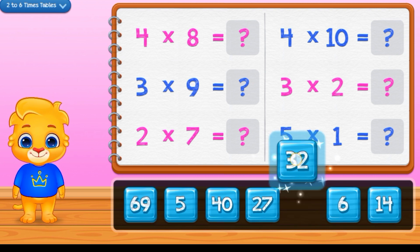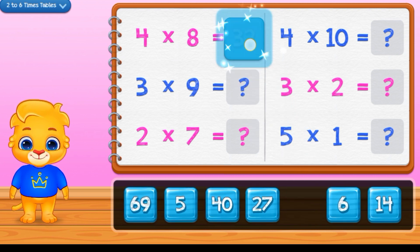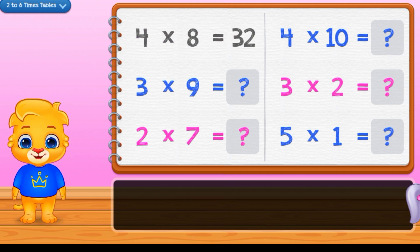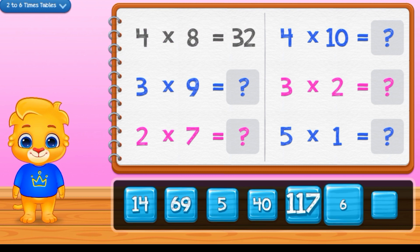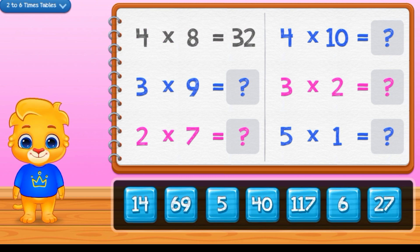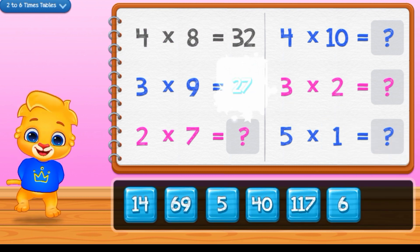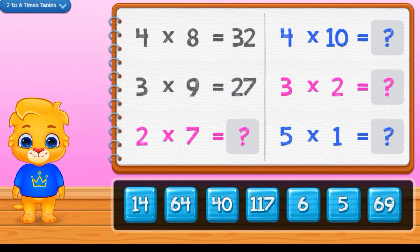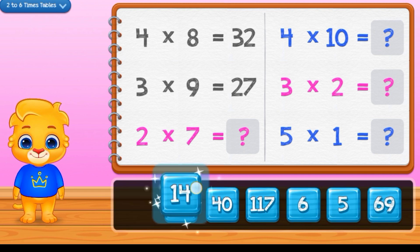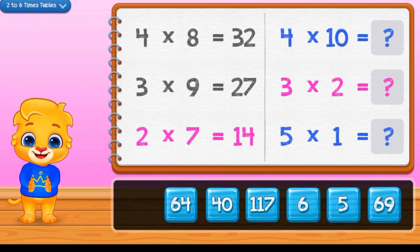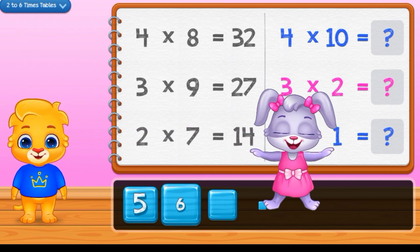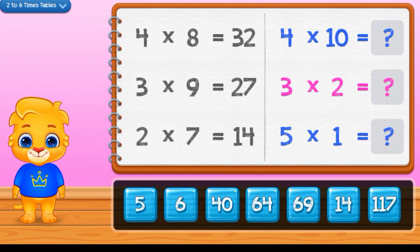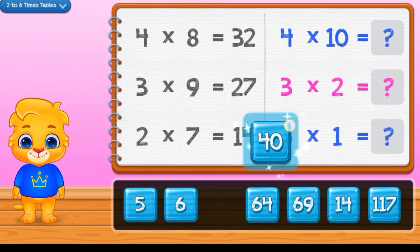4 times 8 equals 32. 3 times 9 equals 47. 2 times 7 equals 40. 4 times 10 equals 40.